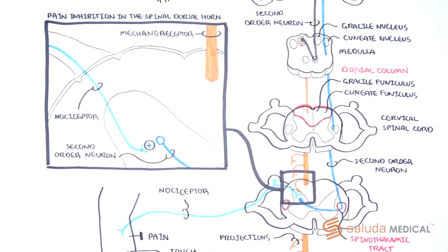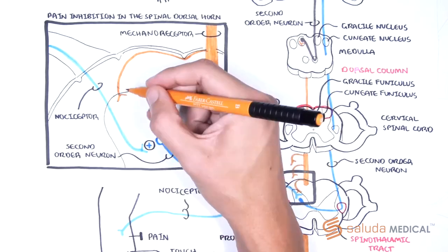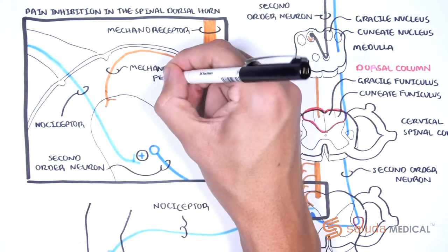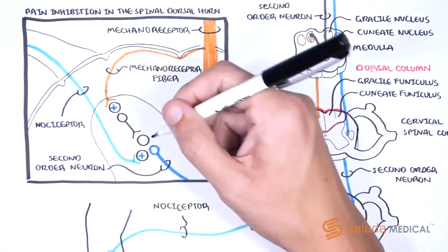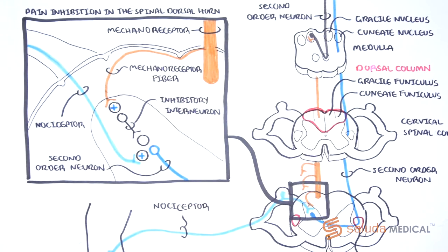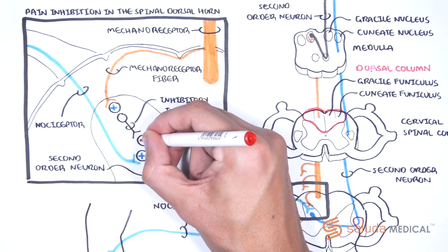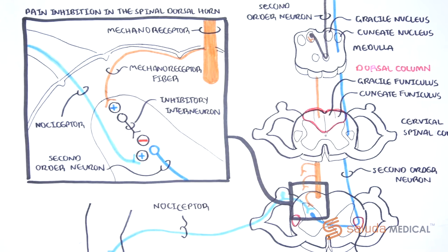The synaptic endings of these fibres connect to inhibitory interneurons, which they can activate. The activation of these inhibitory interneurons is known to suppress the activity of second-order nociceptive projection neurons, such that they are less likely to fire in response to an incoming signal from the first-order nociceptor if inhibitory interneurons are also active.